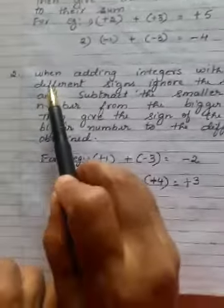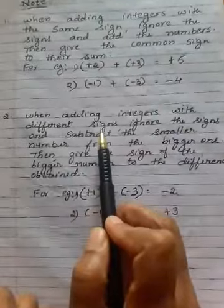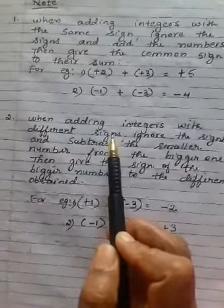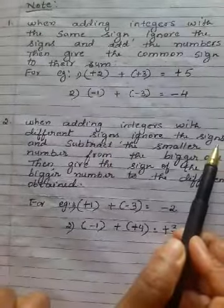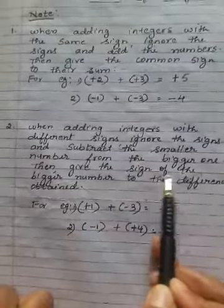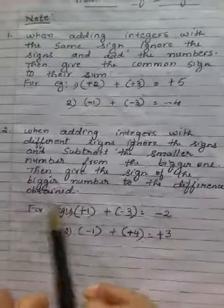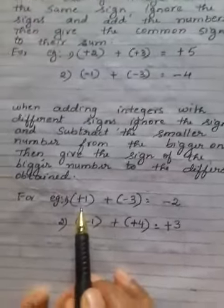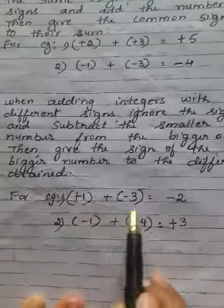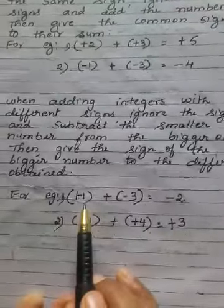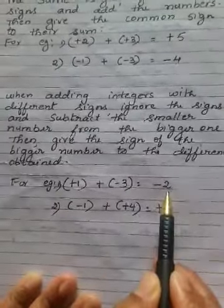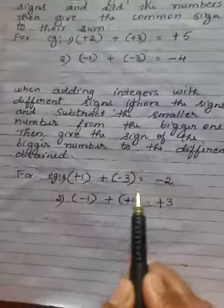The second rule is: when adding integers with different signs — one positive and one negative — ignore the sign and subtract the smaller number from the bigger one. Then give the sign of the bigger number to the difference obtained. For example, here one number is positive and the other is negative. Ignore the sign, subtract: 3 minus 1 equals 2. The bigger number is 3, which has a negative sign, so give negative sign to the difference.